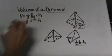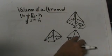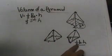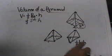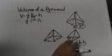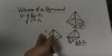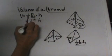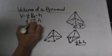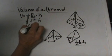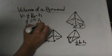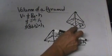If you had a right triangular base you would take one half the base times the height of this part of the pyramid and then you would take that one half base times the height of the base and then multiply that times the height of the whole pyramid or the altitude of the pyramid.